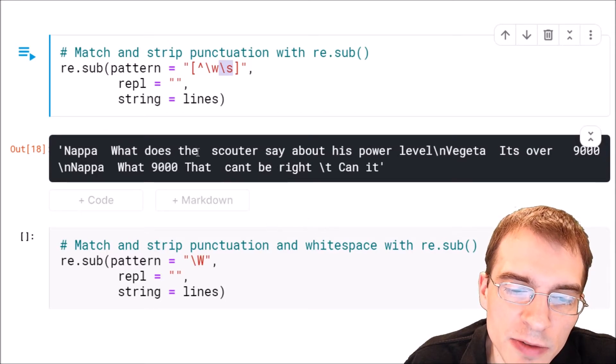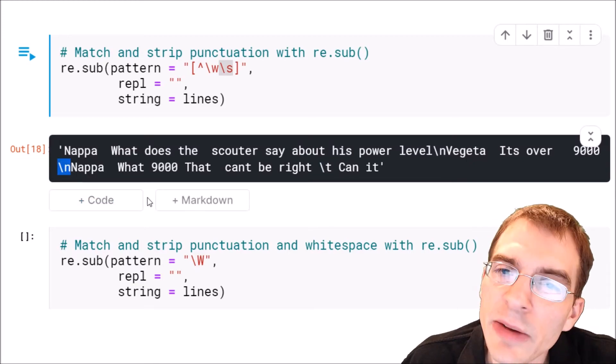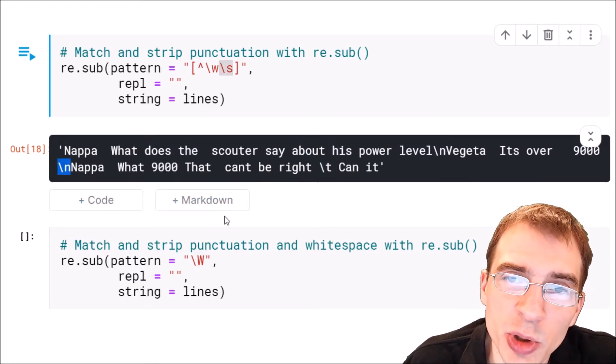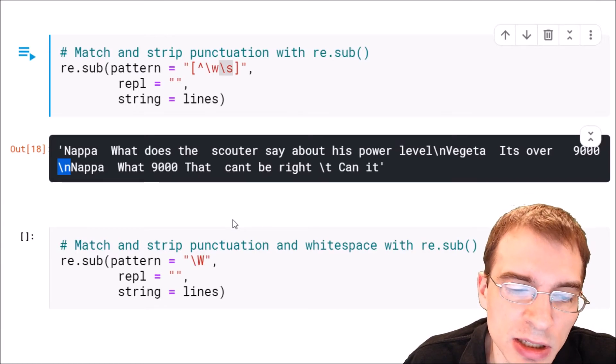So that means we're left with some things that we might not want, such as this tab character here, a new line character here, etc. So if we wanted to match and strip out both punctuation and whitespace, we could do that using a different construction.